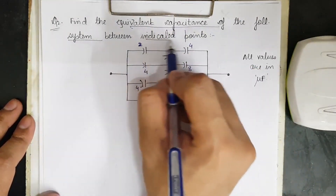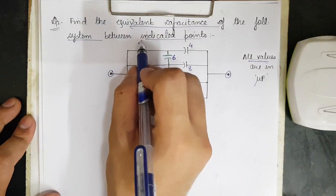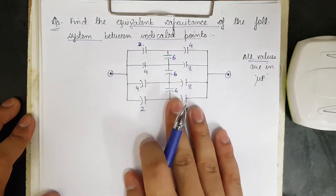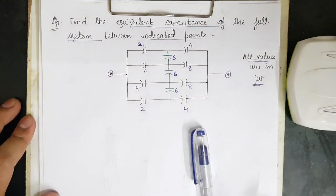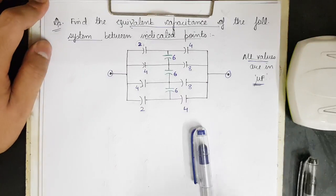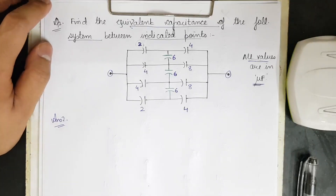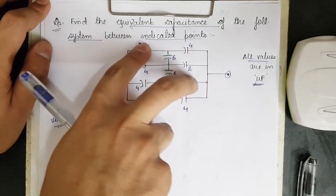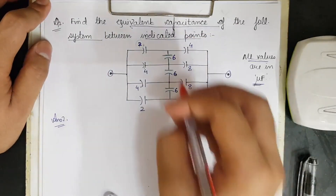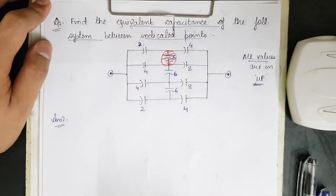Now for the second question — a Wheatstone bridge type problem to find equivalent capacitance between two points. All capacitance values (2, 4, 6, 8, etc.) are in microfarads. To apply the Wheatstone bridge condition: multiply 2×8 = 16 and 4×4 = 16. When these products are equal, the middle capacitor carries no current and can be removed.